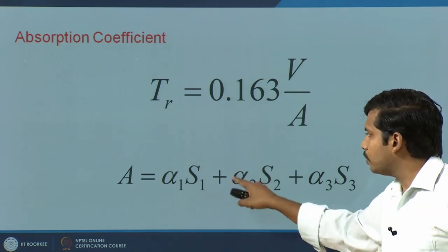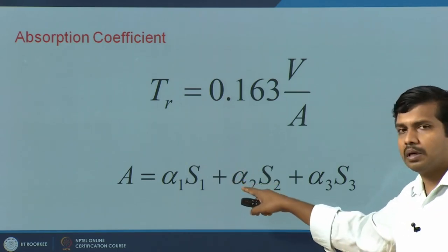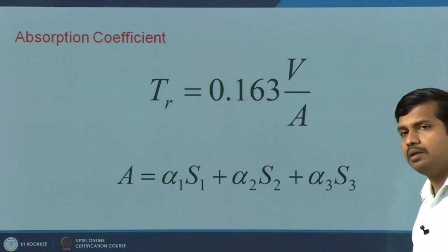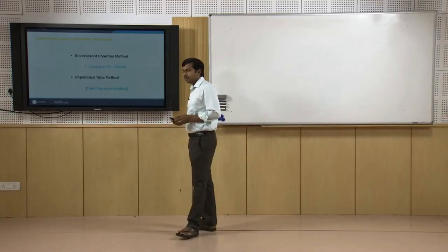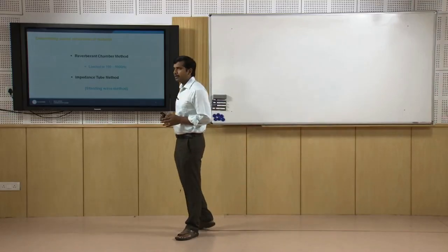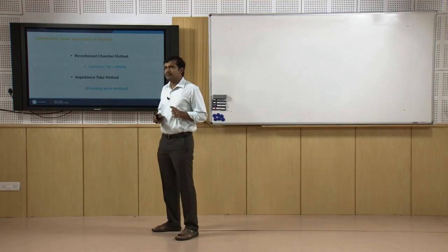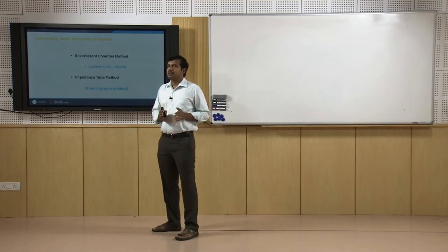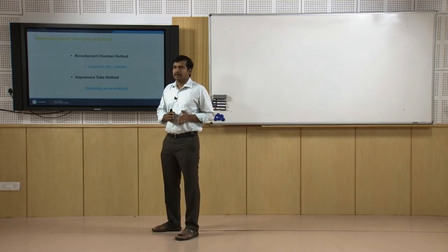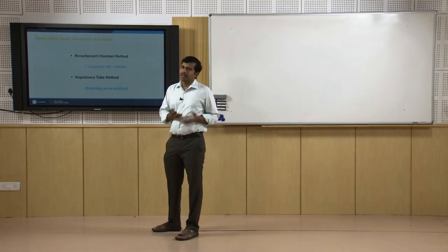Now we will look more closely at what this alpha actually means. Alpha is the absorption coefficient of a particular material. It ranges from 0 to 1. 1 is 100 percent absorbing; 0 is 100 percent reflecting — it does not have any specific absorption.